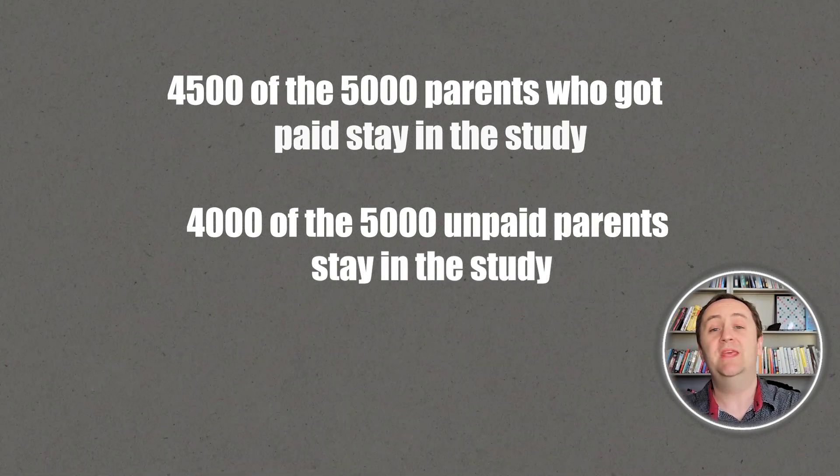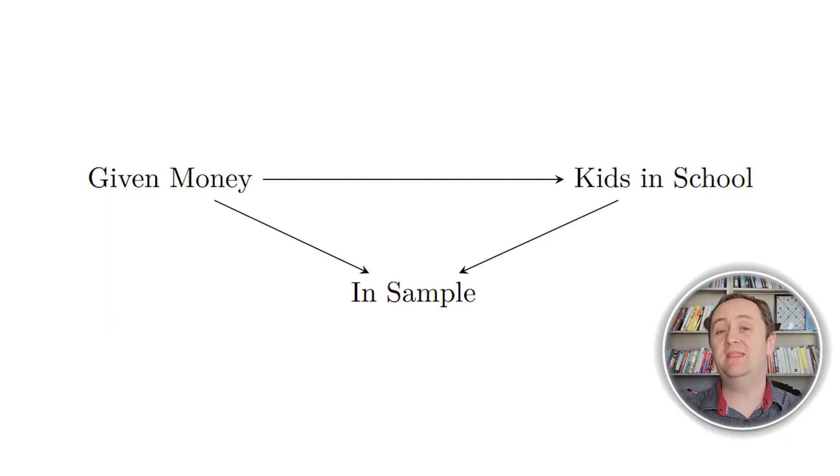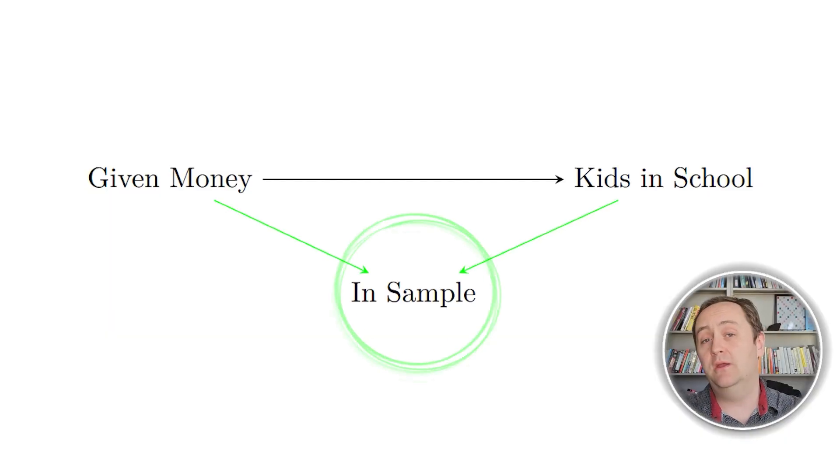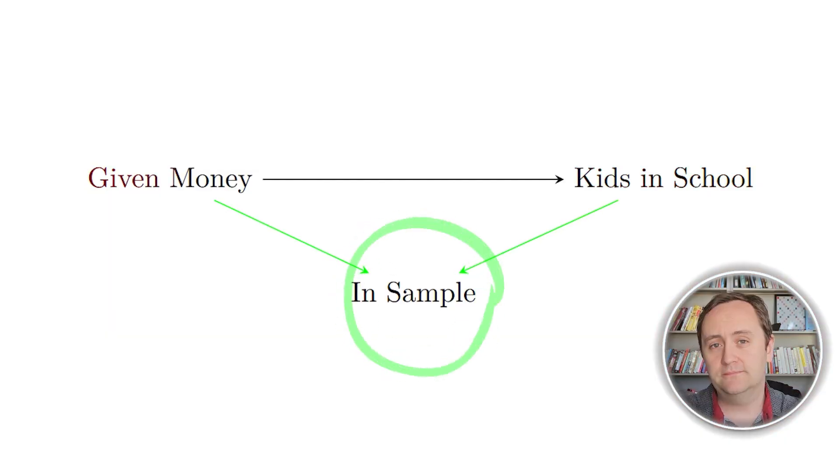There is a problem: getting the money might make you more likely to stay in the study, whereas people who never get any money might be more likely to never report back with the researchers. So we lose track of them and get differential attrition levels between the people who got money and those who didn't. At the end, if we see that people who got money have a higher share of kids still in school — is that because the money was effective, or because the money made different kinds of people drop out of the study? We have a collider bias problem.